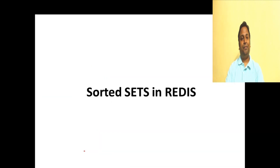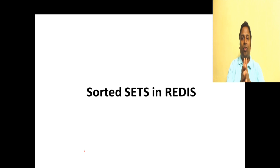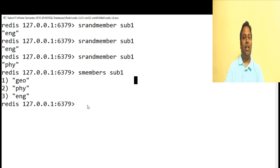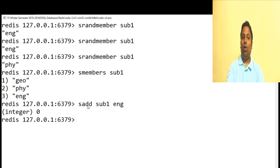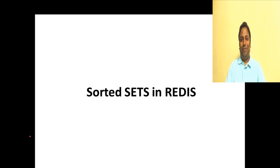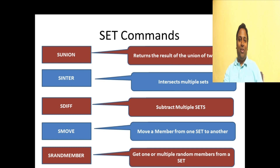That's it for our discussion on sets in Redis. Sets are unordered, have no index concept, and don't allow duplicate values. Let's verify - SMEMBERS subject1, then SADD subject1 english to try adding a duplicate. It returns 0, meaning it was not added. Checking SMEMBERS subject1 shows only one English, because duplicates are not allowed in sets. That's all about sets - let's move to the next concept: sorted sets.